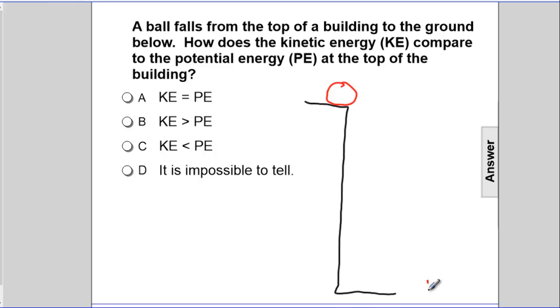So this is a small height, and up here is a large height. So at the top, the PE is its mg times its big height. Down here, its PE is mg times its small height.